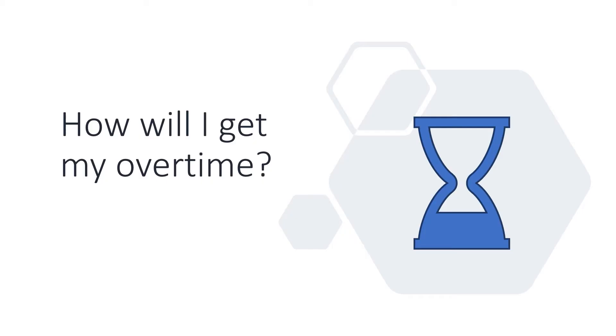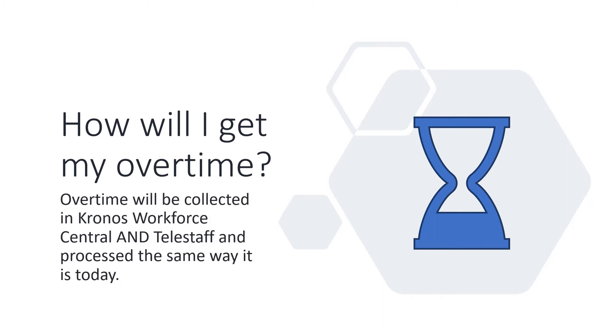How will I get my overtime? Overtime will be collected and entered just as it is today, only with Kronos. The standard practices and procedures for pre-approval remain in place. Supervisors can schedule overtime and approve it directly in Kronos. Telestaff users will be able to be notified about overtime opportunities including troop OT, HCP, and OPA via text and/or voice calling, and can respond directly to the system to accept or reject an overtime opportunity.